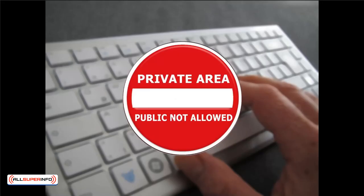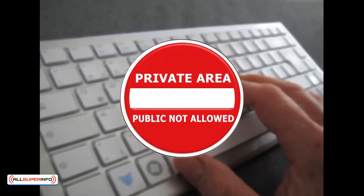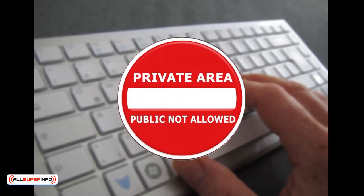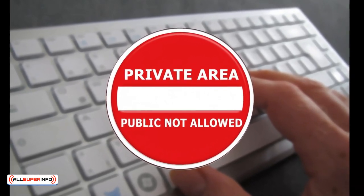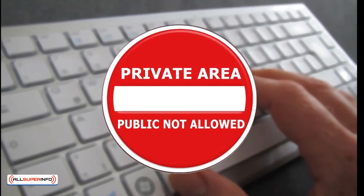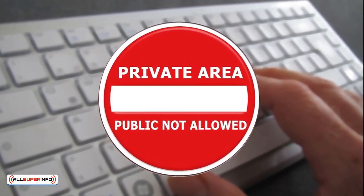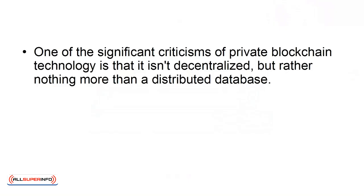Private blockchain. All permissions are kept centralized to an organization with private blockchain technology. This is the kind of blockchain that companies used when they wanted to create their own currencies. One of the significant criticisms of private blockchain technology is that it isn't decentralized, but rather nothing more than a distributed database.